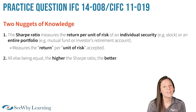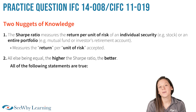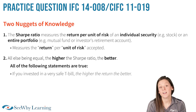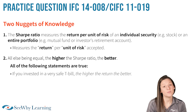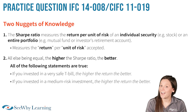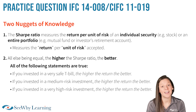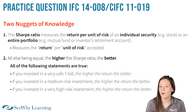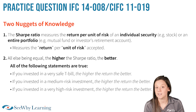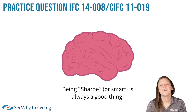Nugget number two: all else being equal, the higher the Sharpe Ratio, the better. Think about it this way. All of the following statements are true. If you invested in a very safe T-bill, you would still say the higher the return, the better. And if you invested in a medium-risk investment, you would still say the higher the return, the better. And if you invested in a very high-risk investment, you would again say the higher the return, the better.